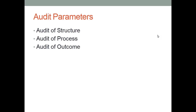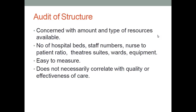We can do audit on the structure, on the process, and on the outcome. Audit of the structure is concerned with the amount and type of resources available — for example, if you have 20 beds in your ward and all are filled, you cannot admit more patients. Similarly, if you do not have a laparoscope in the theater and are doing open cholecystectomy, that is a problem of structure. Parameters include number of hospital beds, staff numbers, nurse-to-patient ratio, theatre suites, wards, and equipment. It is easy to measure but does not necessarily correlate with quality or effectiveness of care.